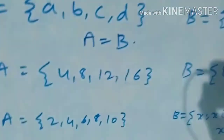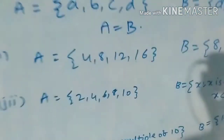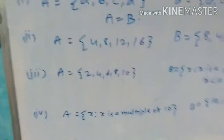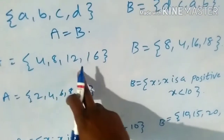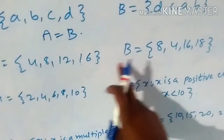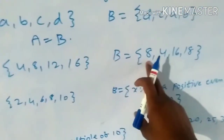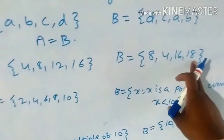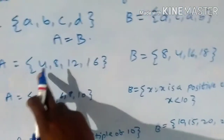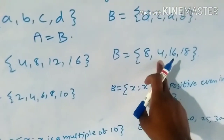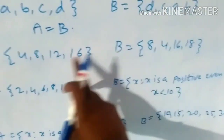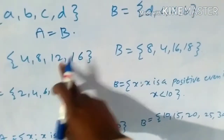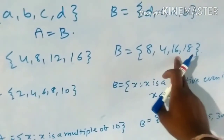So here A is equal to B. In the second question, A is equal to {4, 8, 12, 16} and B is equal to {8, 4, 16, 18}. Check: 4 is present, 8 is present, but 12 is not there in B.